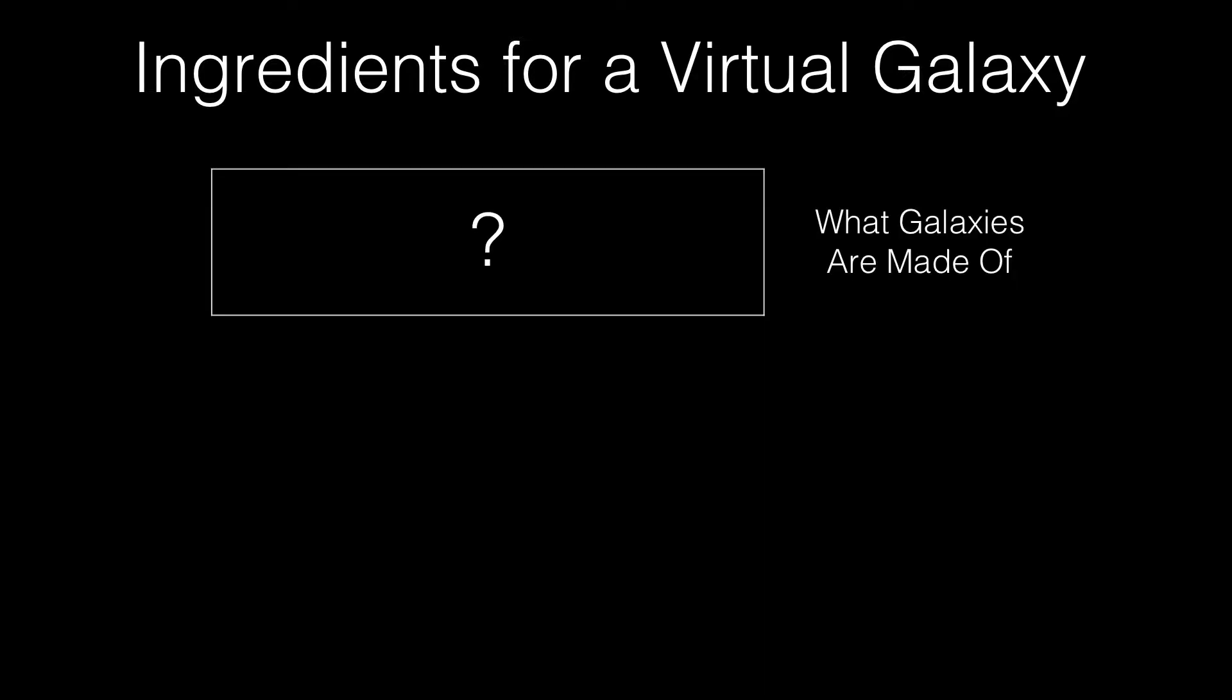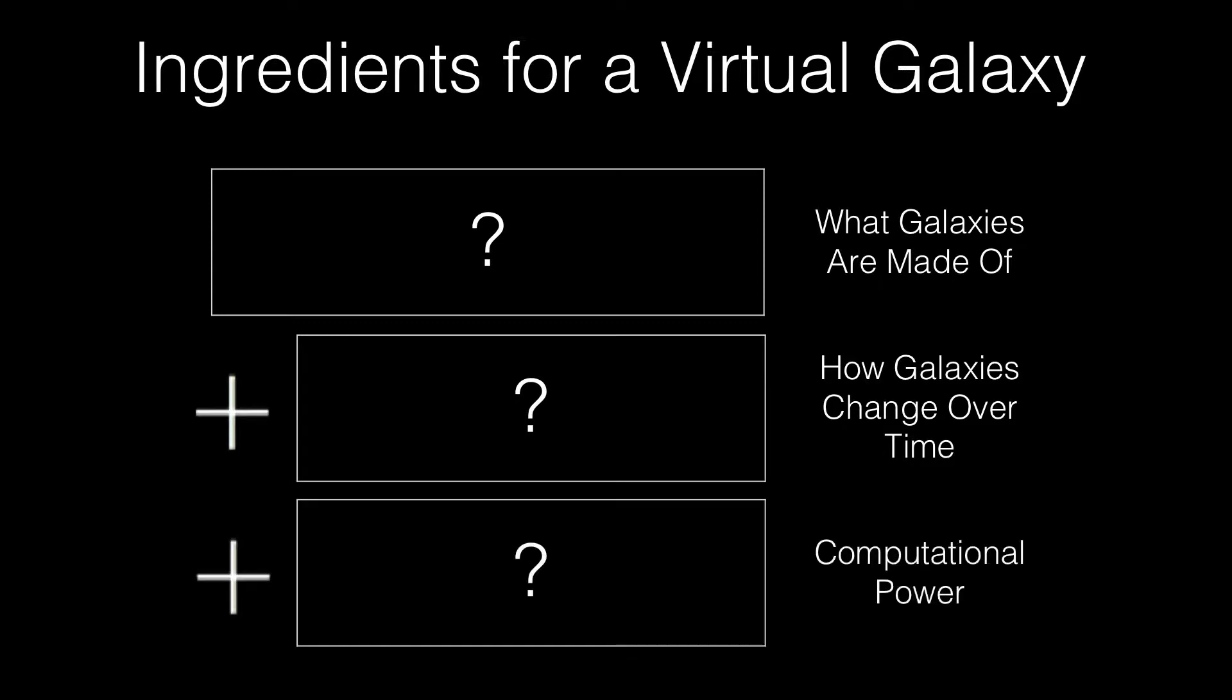What are the ingredients for a virtual galaxy? First, you need what galaxies are made of. Second, you need how galaxies change over time. And third, you need the necessary computational power to do it. Let's break these down even further.